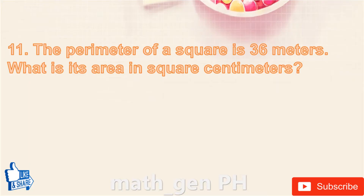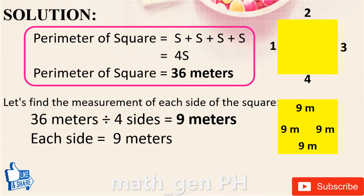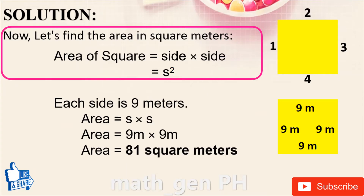Solution: The perimeter of a square equals side plus side plus side plus side. The perimeter is 36 meters. To find the measurement of each side: 36 meters divided by 4 sides equals 9 meters. Each side equals 9 meters.